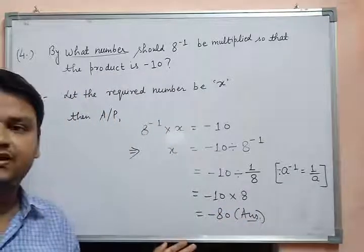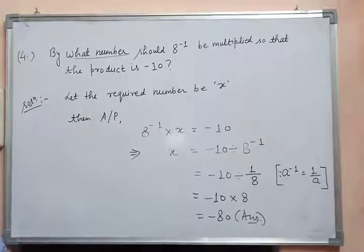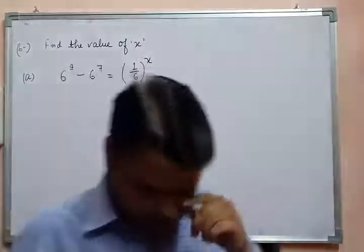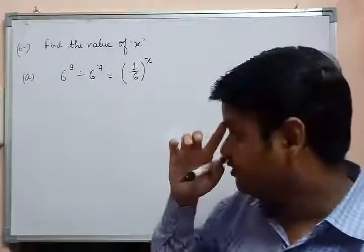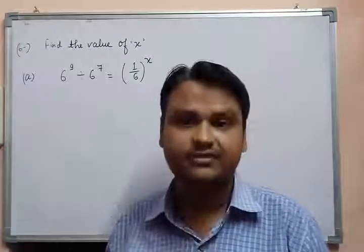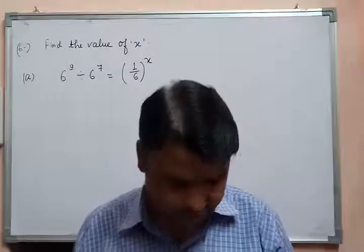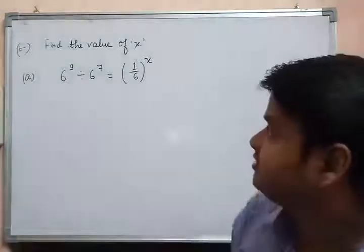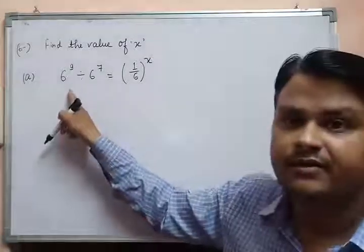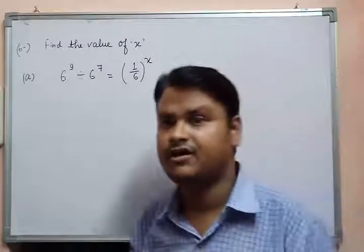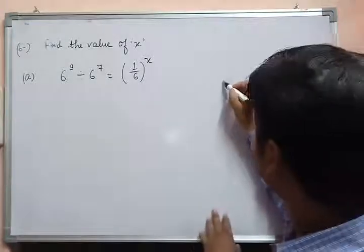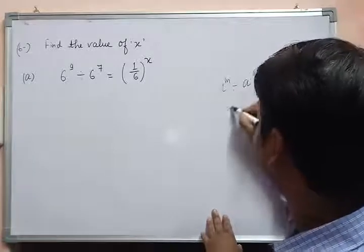Pause the video to note it down in your copy or take a screenshot. Moving on to question number 6 — I have left question number 5 as your responsibility to solve by yourself, since questions 4 and 5 are the same type. In question number 6A, you have to find the value of x: 6 to the power 9 divided by 6 to the power 7 equals 1 upon 6 to the power x. First, apply the laws of exponents.